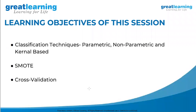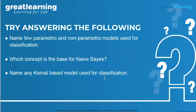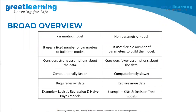The classification techniques: parametric, non-parametric, and kernel-based. Pop quiz — can you name a few parametric and non-parametric models used for classification? Parametric: Naive Bayes, discriminant analysis, logistic regression. Non-parametric: decision tree, random forest, gradient boosting, and SVM is also non-parametric. The base concept for Naive Bayes is Bayes theorem. For kernel-based classification, the example is support vector machine. Now let's compare parametric versus non-parametric.